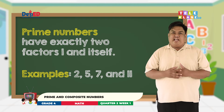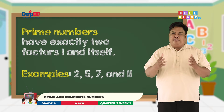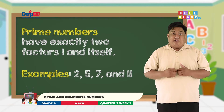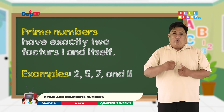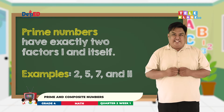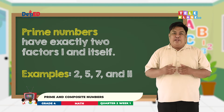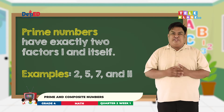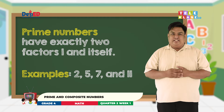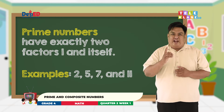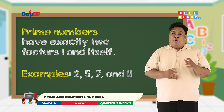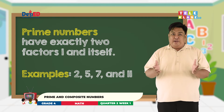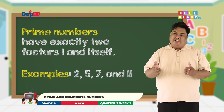Another example is number 13. So what are the factors of 13? The factors are 1 and 13. Very good! Now for our last example, what do you think are the factors of 37? Very good! We only have 1 and 37. Can you follow? Let's proceed!